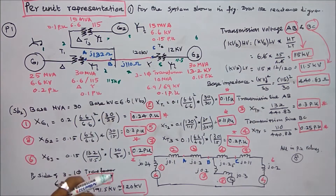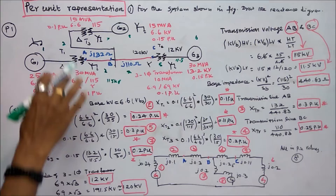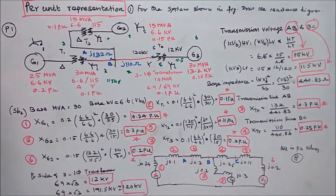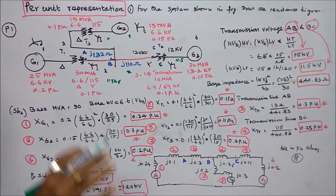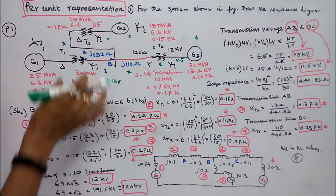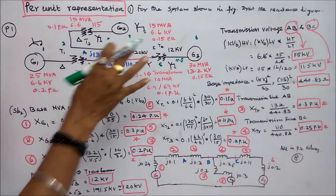Three transformers T1, T2, T3, and two transmission lines AB and BC.